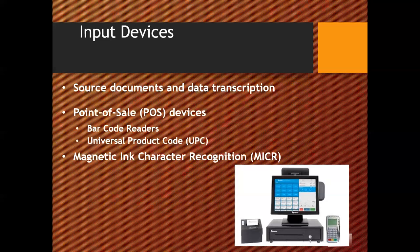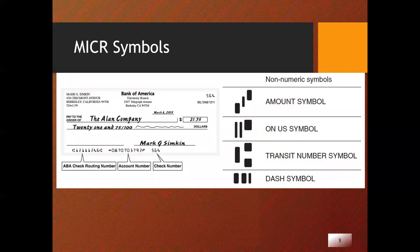One example is the barcode readers that interpret the UPC, the universal product code, commonly printed on supermarket and variety store items. The magnetic ink character recognition, the MICR, refers to those odd-looking numbers and symbols that you see on the bottom of bank checks. On the next screen you'll see an example of a bank check.